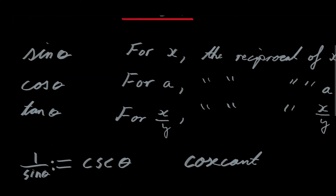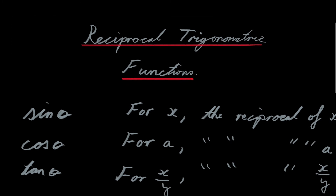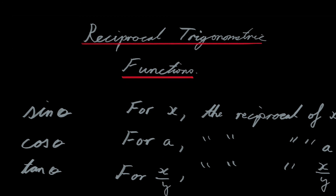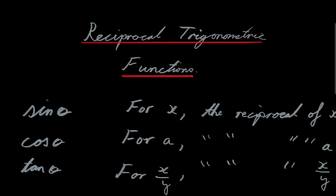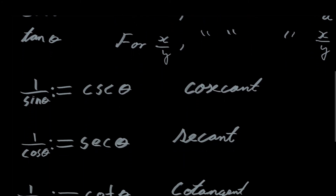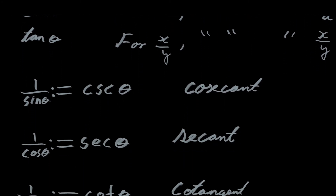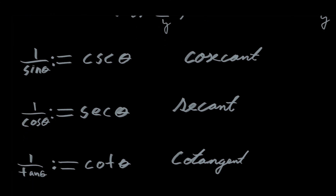Just to summarize what I've done in this video: I showed where we've progressed in this series — we are still in the revision topics, specifically the trigonometry revision topic. In this video I covered the reciprocal trigonometric functions: the reciprocal of sine of theta is cosec of theta, the reciprocal of cos of theta is sec theta, and the reciprocal of tan of theta is cot of theta or cotan of theta.